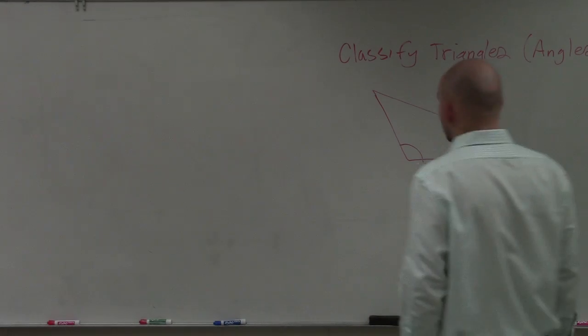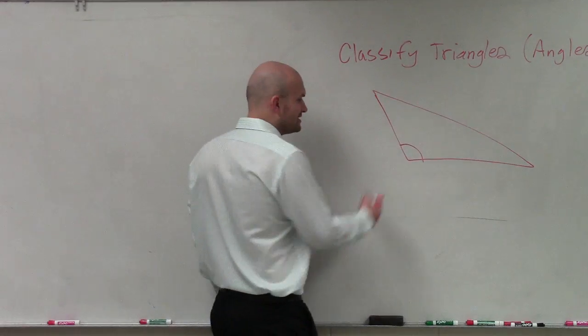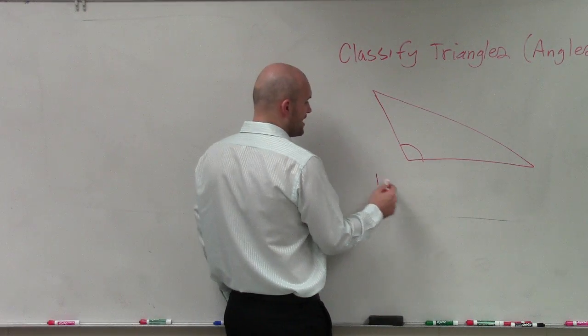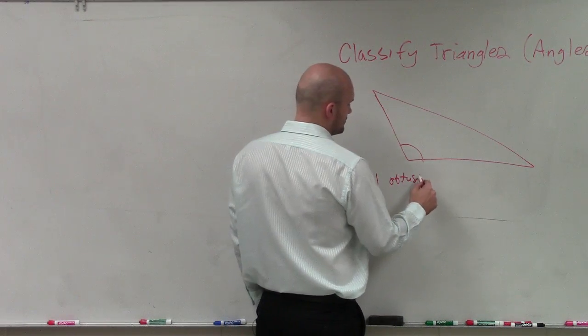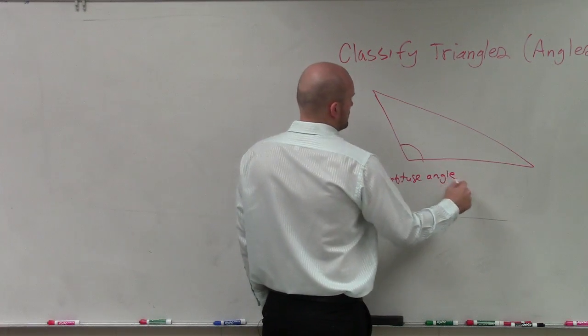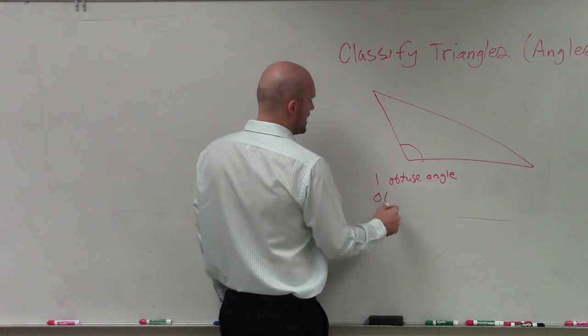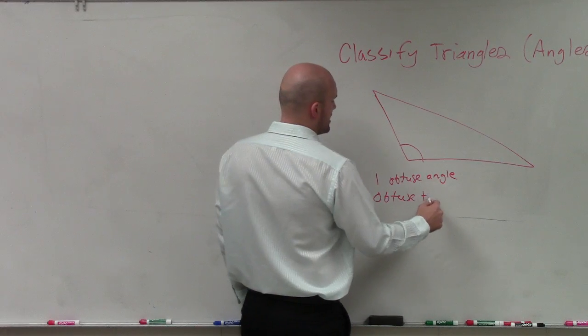One is when you have an angle that is now larger than 90 degrees, so it's an obtuse. So when you have one obtuse angle, you have now an obtuse triangle.